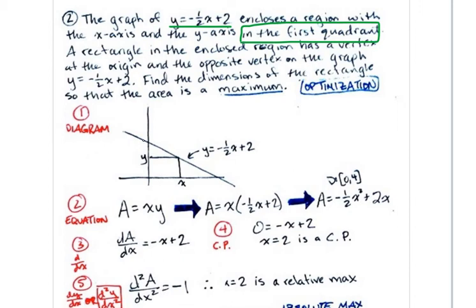Same type of problem. Both of them, you should start out by drawing a diagram. So here, obviously, these regions don't matter. We're just looking at the first quadrant. Obviously, we've got one vertex at the origin, and the opposite vertex is on the graph. So this is just the general case for what this would look like.